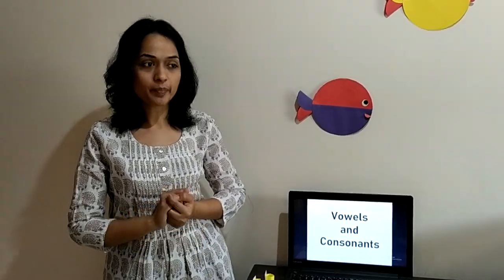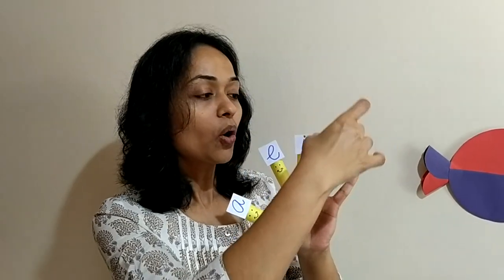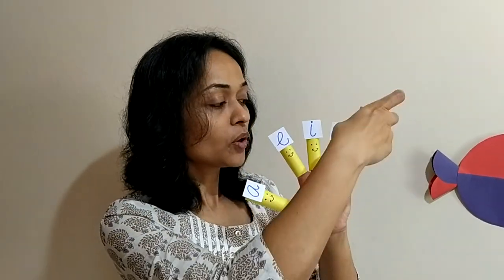First let me tell you a story. Once upon a time in a village there were 26 siblings. Out of those 26 siblings, 5 siblings — A, E, I, O, U — used to live with their grandmother, and the rest 21 siblings used to live with their mother.